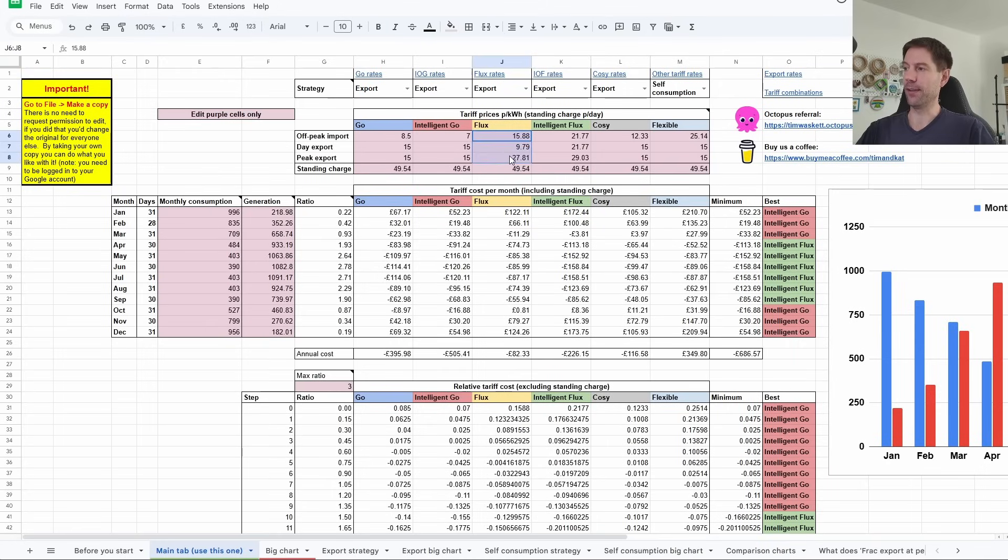That's why I think it's not really particularly relevant for Flux at the moment. The Flexible tariff I've set to what I've called self-consumption, because with the Flexible tariff you obviously don't have an overnight rate and you're better off self-consuming as much as possible. What I mean by that is using your solar to cover your house consumption and fill your batteries, and at no point ever force-exporting your batteries—you're just using your batteries to increase the level of self-consumption.